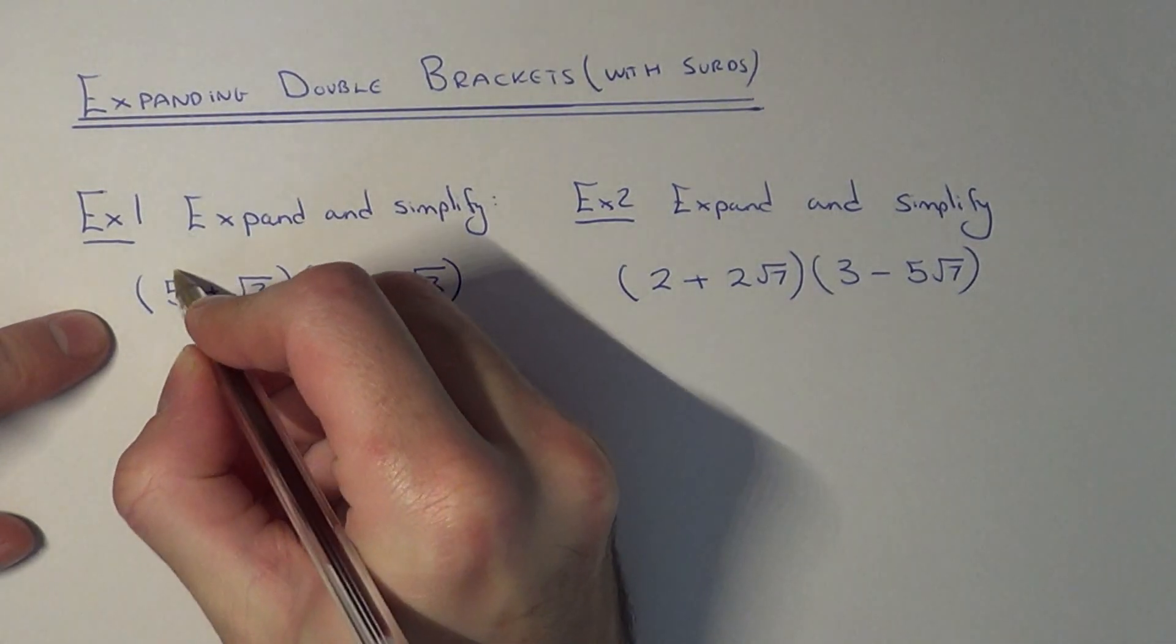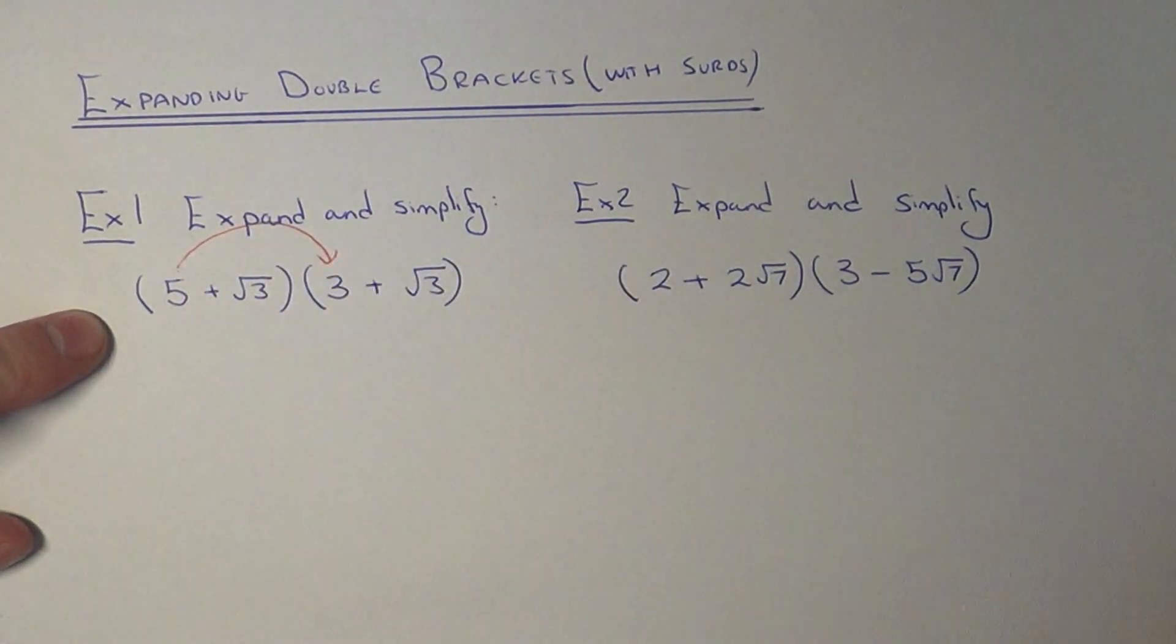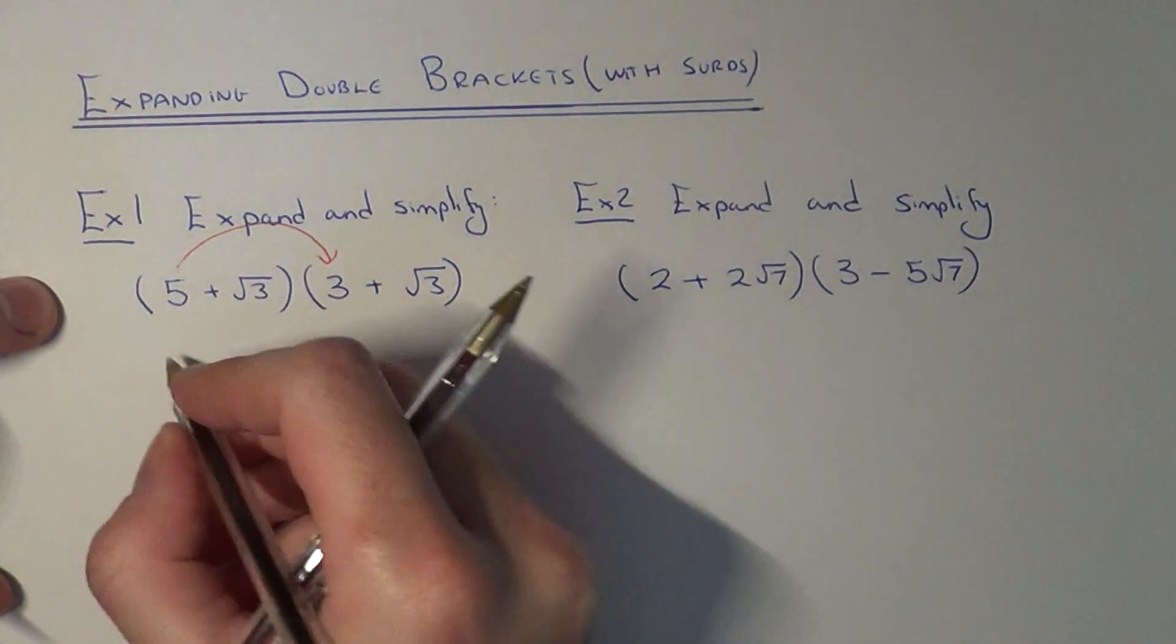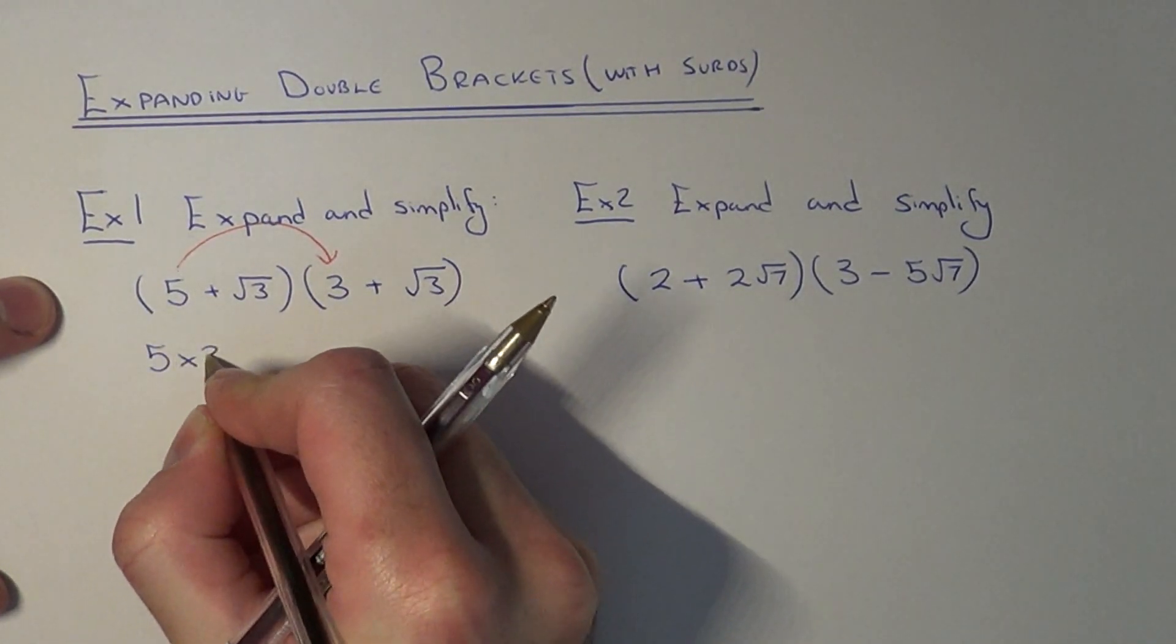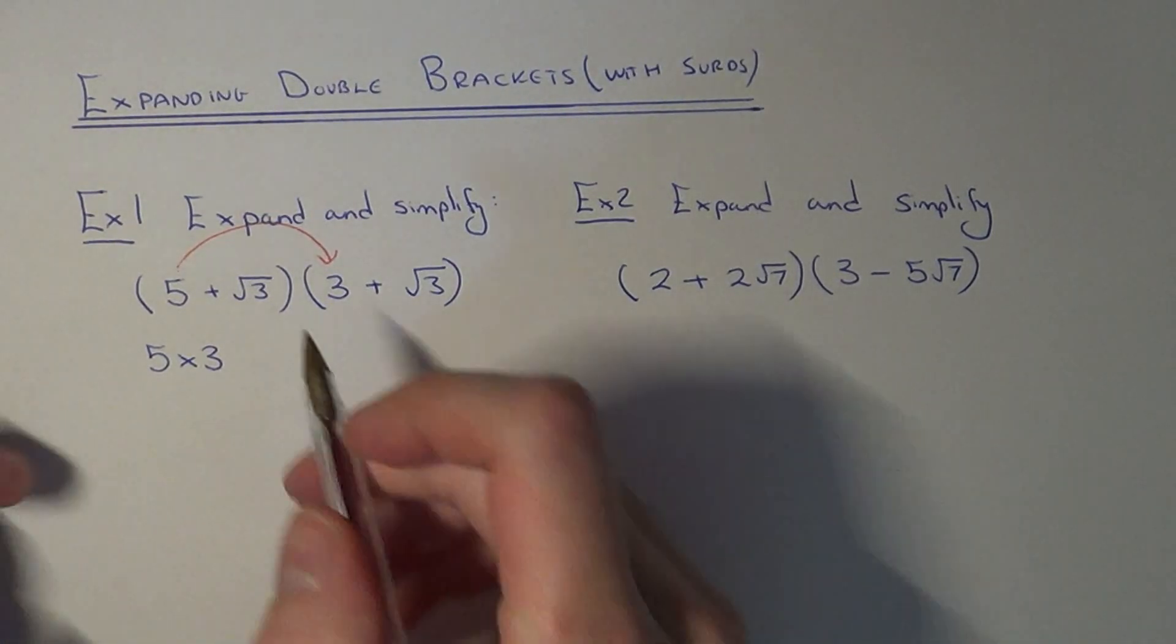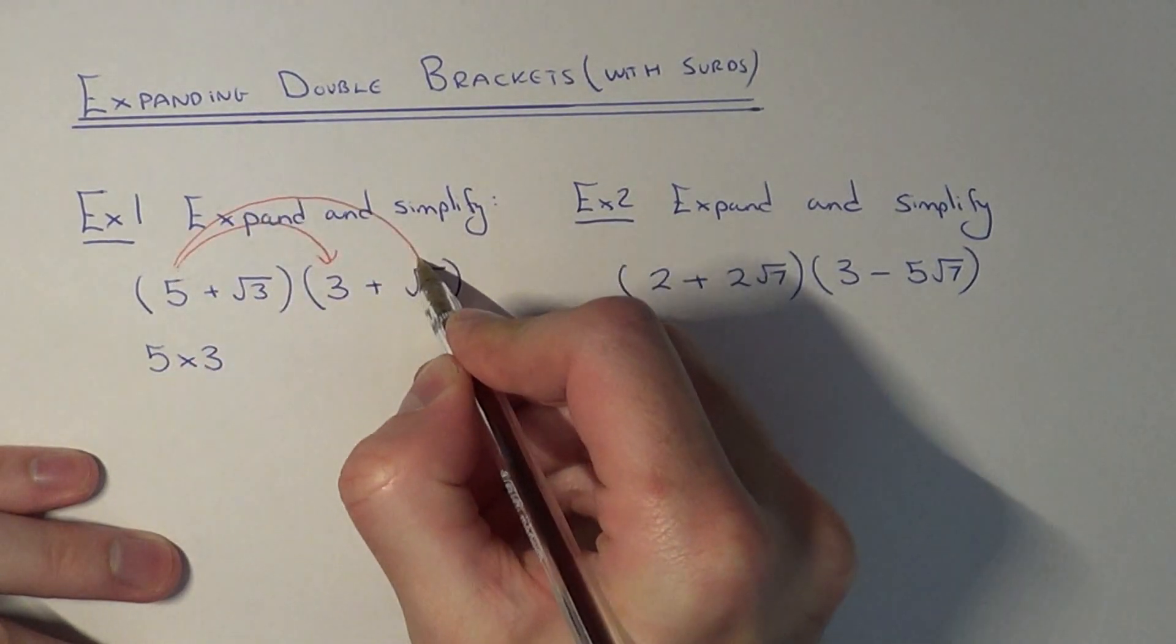So first of all, let's multiply our first terms together. We've got 5 times 3. Let's multiply our outer terms next.